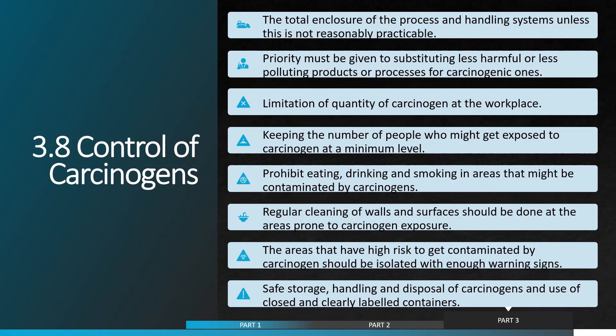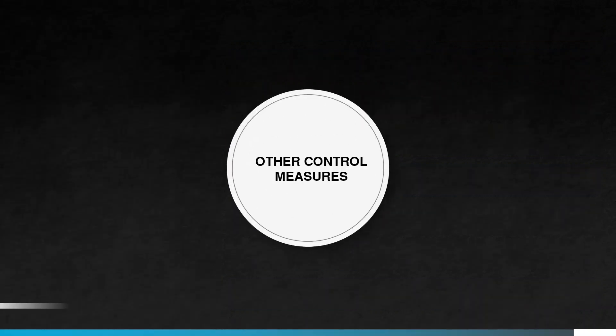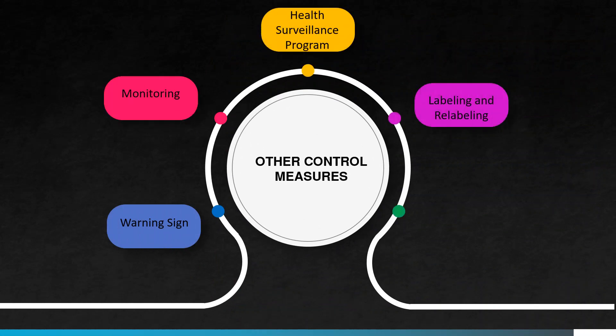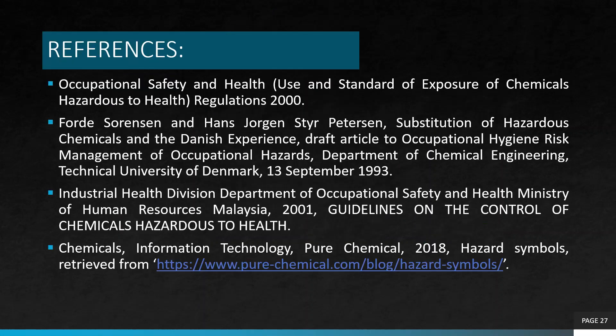These are the ways to control the exposure to carcinogens. Other control measures include warning signs, monitoring, health surveillance programs, labeling and relabeling, and information, instruction, and training. That's all from us — thanks for watching.